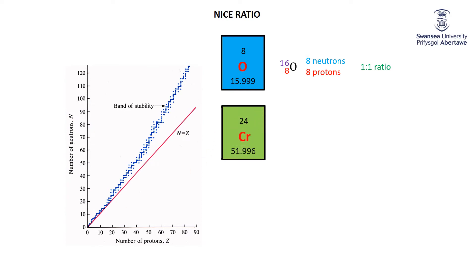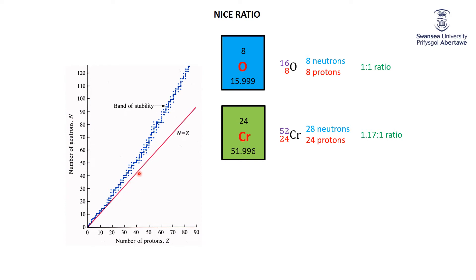Let's go up to chromium — atomic number 24. You can see it's deviating a little bit from the one-to-one ratio; the band of stability is above the one-to-one line. The weighted average of all chromium's isotopes is 52, so we say 52 chromium is the ideal isotope. With a total mass of 52 and 24 protons, that leaves us 28 neutrons. The ratio of 28 to 24 is 1.17:1. As we expected from looking at the chart, its ideal ratio has a little bit more neutrons than a one-to-one ratio.